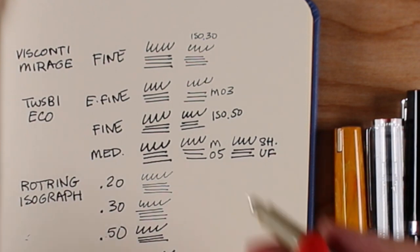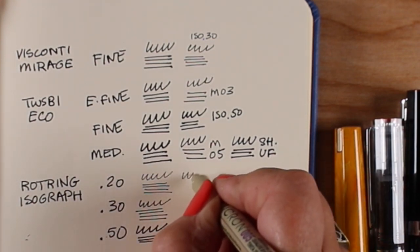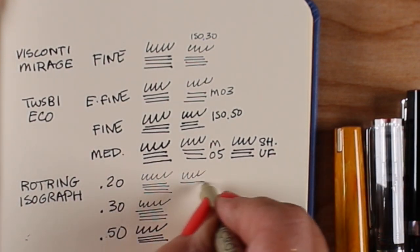And so it is what it is. But the medium in the Twisby Eco is equated to both the Sharpie Ultra Fine and the Micron 0.5, 0.505. I don't know. Sometimes they have a point, sometimes they don't. I don't understand all this. Too much math.